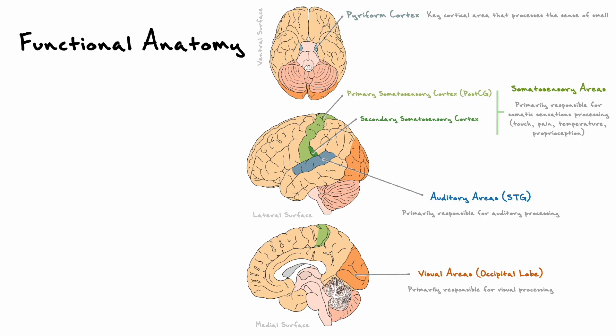That principle is the idea of division of labor and functional hierarchy. The most striking and well-studied example happens in the visual areas, which are all primarily located in the occipital lobe. The cortical areas representing the visual areas can be broadly divided into the striate and extra-striate cortex. The striate cortex represents the first stage of visual processing and processes somewhat crude information from the eye, such as the orientation of visual input. Then this information is passed down to extra-striate areas to process and integrate more complex aspects of vision, such as movement and more complex shapes.